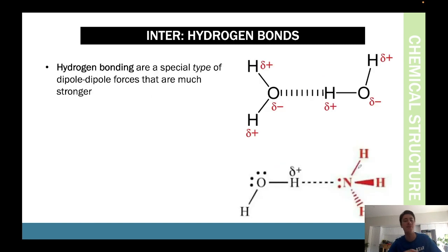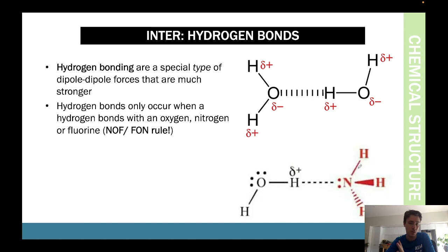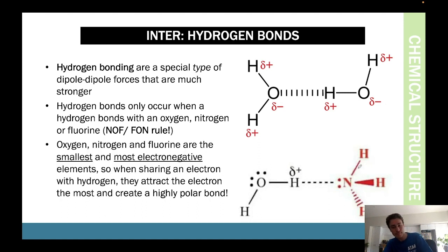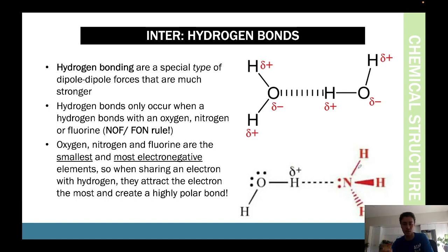Hydrogen bonds are a special type of dipole-dipole force. They occur between hydrogen atoms and nitrogen, oxygen, or fluorine — remember the NOF rule. Hydrogen must bond with one of those three, and there must be polar molecules involved. Oxygen, nitrogen, and fluorine are the smallest and most electronegative atoms, so when they share with hydrogen they make an extra-strong bond. Hydrogen bonds are stronger than regular dipole-dipole forces.